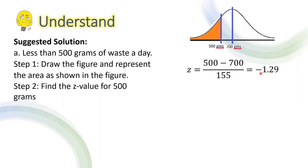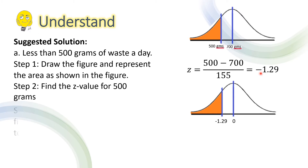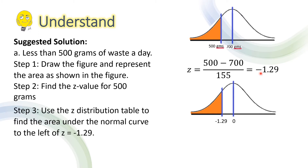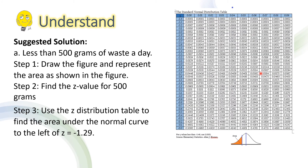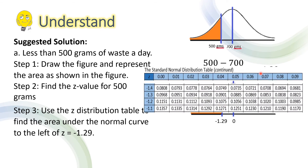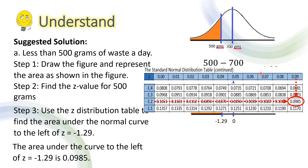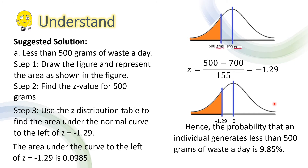This is shown in the z-distribution as follows. For step 3, use the z-distribution table to find the area under the normal curve to the left of z = −1.29. The discussion on finding the area under the normal curve is in the video presentation entitled 'Regions Under the Normal Curve' — the link is in the description of this video. The area under the curve to the left of z = −1.29 from the table is 0.0985. Hence, the probability that an individual generates less than 500 grams of waste a day is 0.0985 or 9.85%.